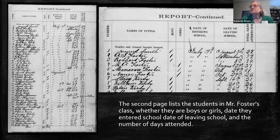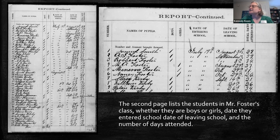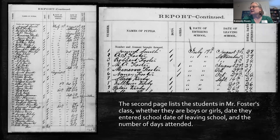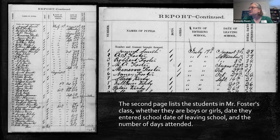He numbers the students — the right side is just an enlargement of the top of the report on the left. Samuel Smith is a boy who started school July 19th and left August 30th. A.J. Foster, also a boy, attended July 19th through September 12th. The total days of attendance for each student are listed: 29, 39, 34, 27. Minerva Foster attended the whole time the school was open — 61 days. At the end of the school packet, there was the teacher's report.